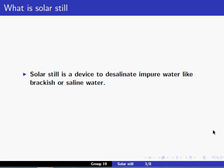By definition, a solar still is a device to desalinate impure water like brackish or saline water. It is a simple device to get potable fresh distilled water from impure water.